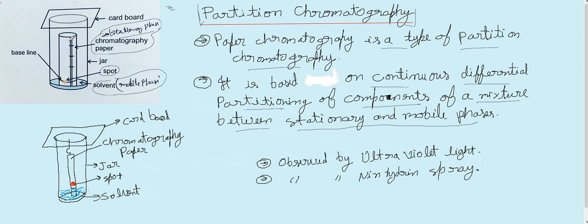There are two processes of partition chromatography. Both processes are the same, so we are going to understand this one. Here we use a different type of paper called chromatography paper.